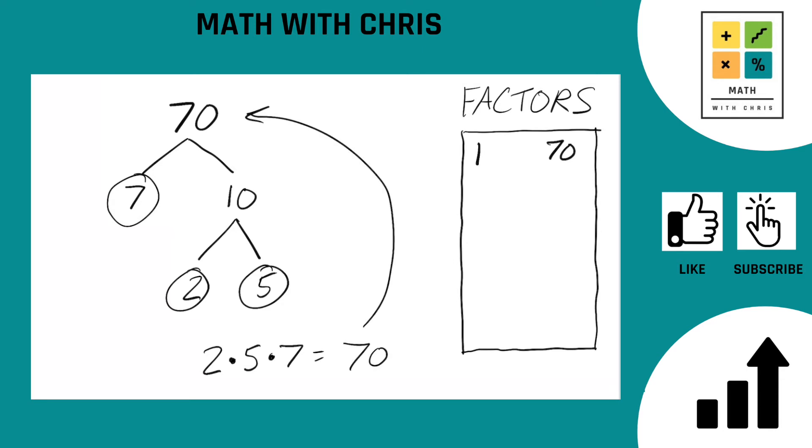Let's go ahead and bank all the prime numbers we found. We found a 2, we found a 5, and we found a 7. And any number we hit along the way can also be banked. We hit a 10 along the way, so we can go ahead and bank the 10.